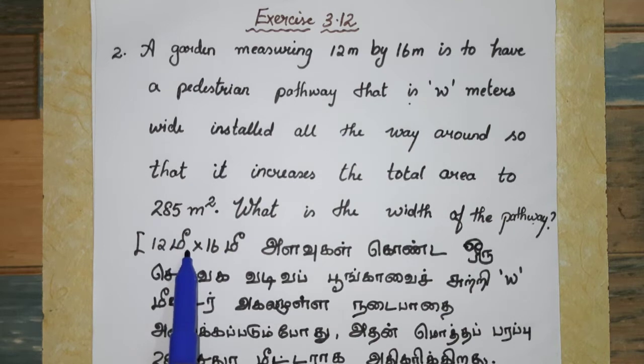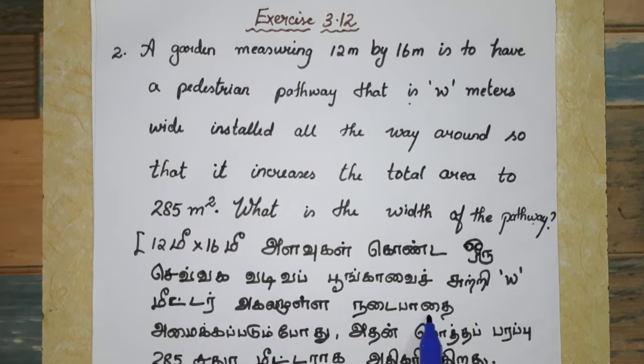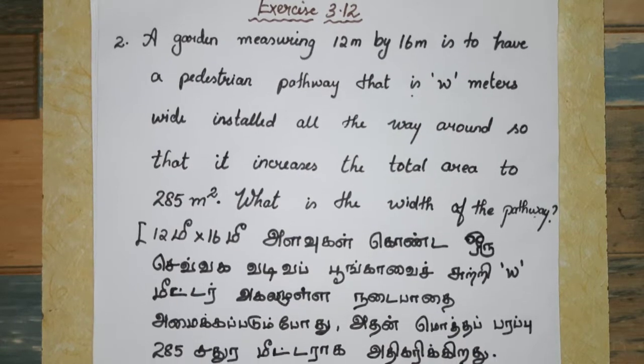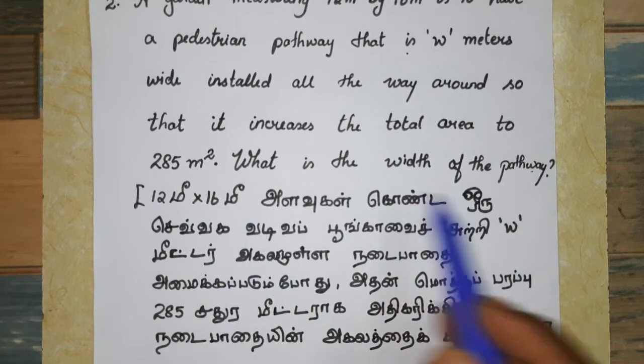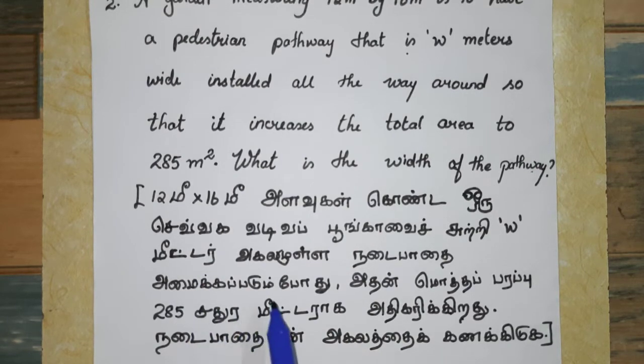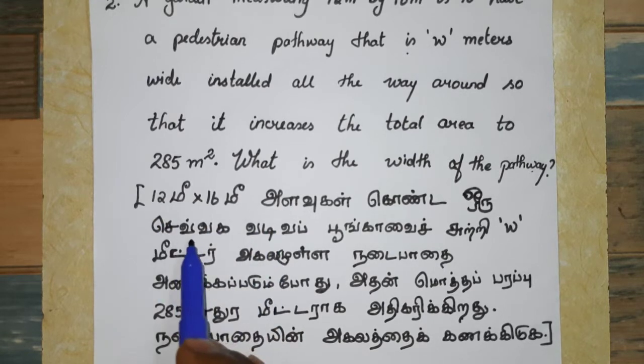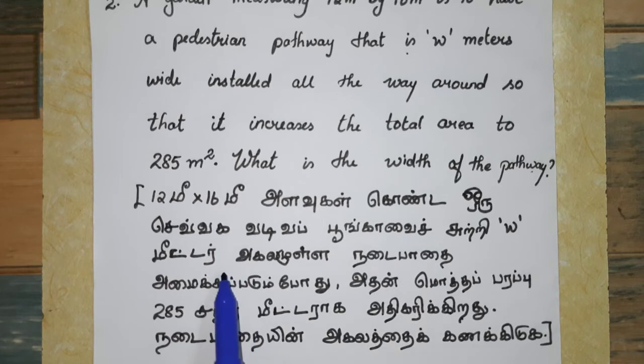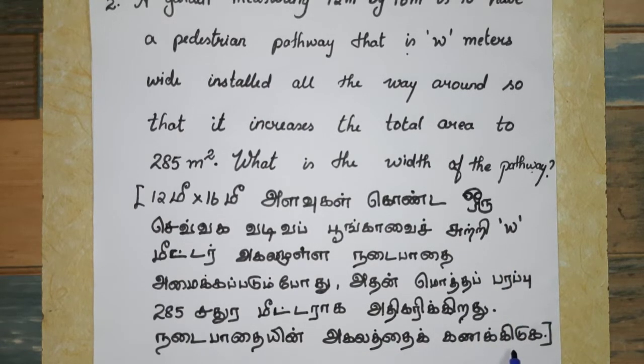The garden is 12 meters by 16 meters. A pathway of W meters width goes around the rectangular garden. We need to find the width of the pathway.